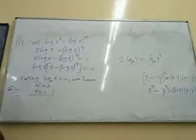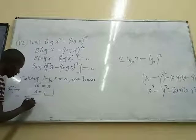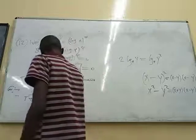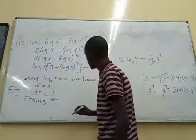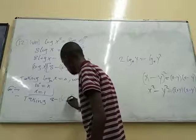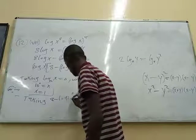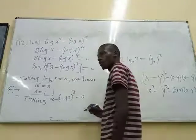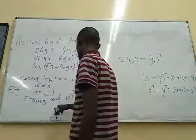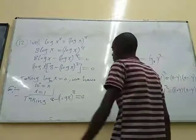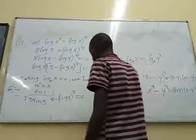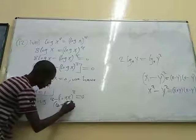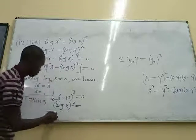Again, we get this other part. So we now take 8 minus the log of x raised to power 3. We equate this to 0. So I'm going to take this negative log of x to the power 3 to the other side of the equal sign. Or if you want, you can take 8 to the other side of the equal sign. You still have the same answer. So here I'm going to have the log of x raised to power 3 being equal to 8.